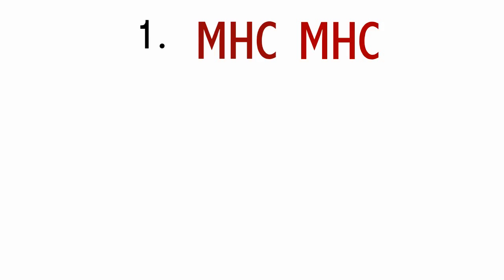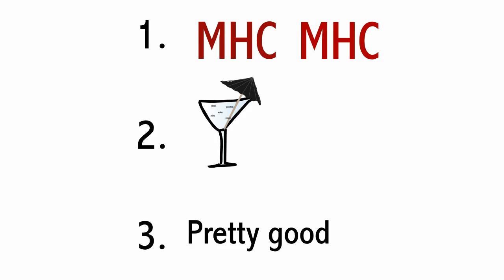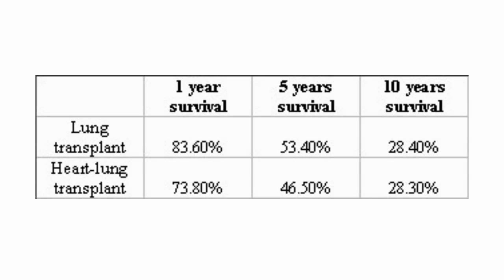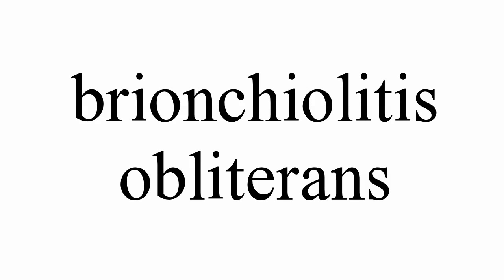So by first minimizing MHC differences, then using a regimen of immunosuppressant drugs, we can do a pretty good job of keeping transplanted lungs working in the recipient's body. As stated before, though, lung transplants are really a temporary treatment, as very few people last more than 10 years with transplanted lungs before bronchiolitis obliterans or some other complication takes hold, and the patient dies.